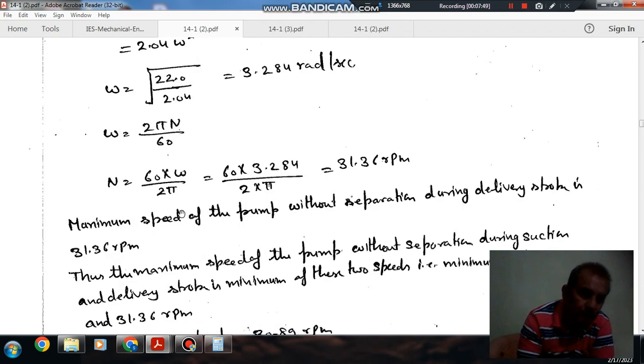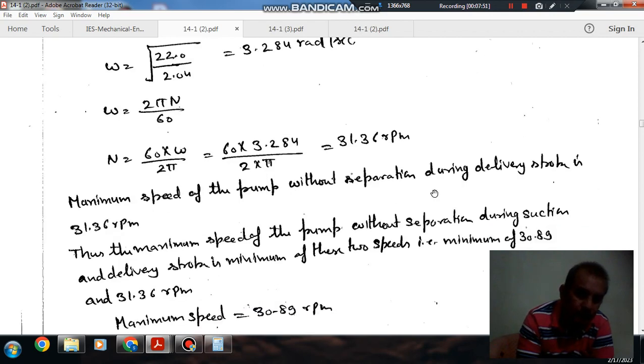So maximum speed without separation during delivery stroke is 31.36 RPM.